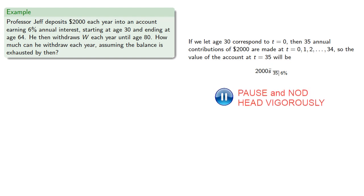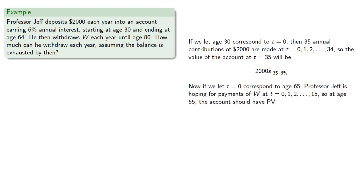Now we'll reset the clock and let t equals 0 correspond to age 65. Then Professor Jeff is hoping for payments of w at t equals 0, 1, 2, and so on up to 15. So at age 65 the account should have present value w a double dot angle 16 at 6%. And we want the value of the retirement account to equal the present value of the annuity.